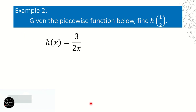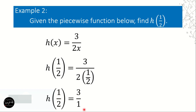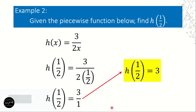So h of x is equal to 3 over 2x. We replace x with 1/2: h of 1/2 equals 3 over 2 times 1/2. Now, 2 times 1/2 equals 1, so this becomes 3 divided by 1, which equals 3. Therefore, h of 1/2 is equal to 3.